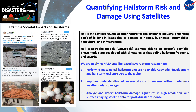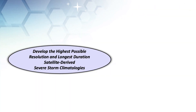In this project, we are applying NASA satellite-based severe storm research to generate hailstorm climatologies and enable catastrophe model development and hailstorm resilience across the globe. We're also using these climatologies to improve understanding of severe storms, especially in areas without adequate weather radar coverage, which is actually most of the globe. We're also using other types of satellite data to study hailstorm damage signatures to assess where hail swaths occur and where we need to devote resources for post-disaster response. The primary focus is to develop the highest possible resolution and longest duration satellite-derived hailstorm and other severe storm type climatologies.